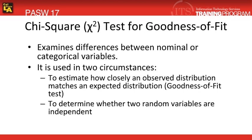Nominal measurements are used when you're working with names such as males and females. At the ordinal level, that's when you're dealing with different rankings of items such as dislike, neutral, or like. This particular non-parametric test is going to examine the differences in your cases and let you know if the random variables that you're working with are independent of one another. Also, it's going to be used to determine how well your observation matches your expectations.